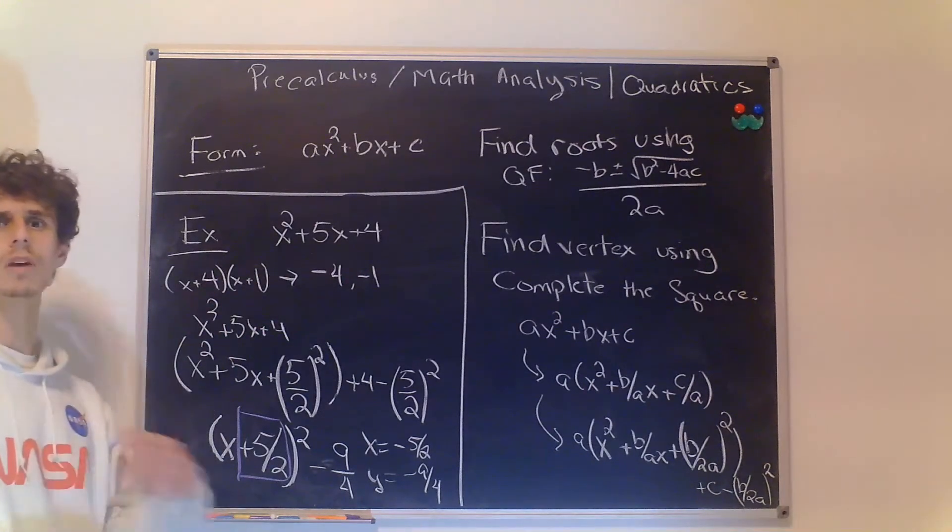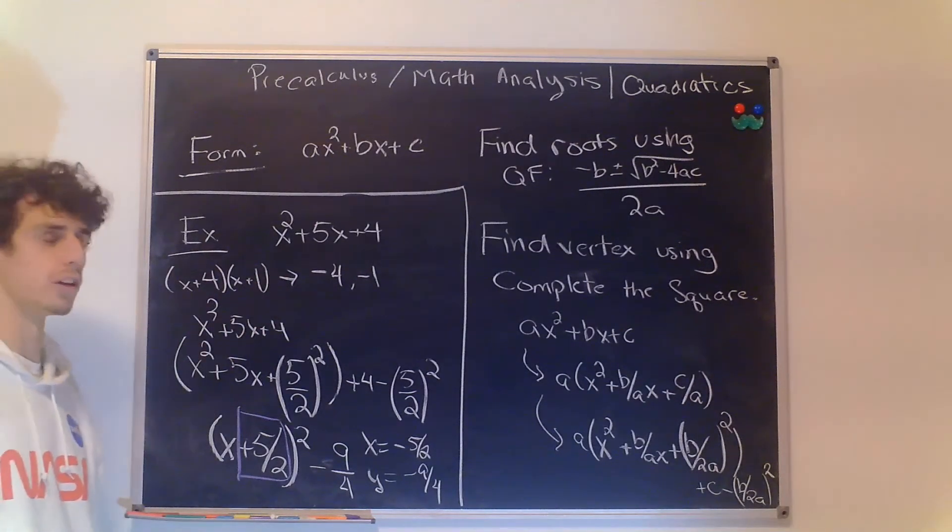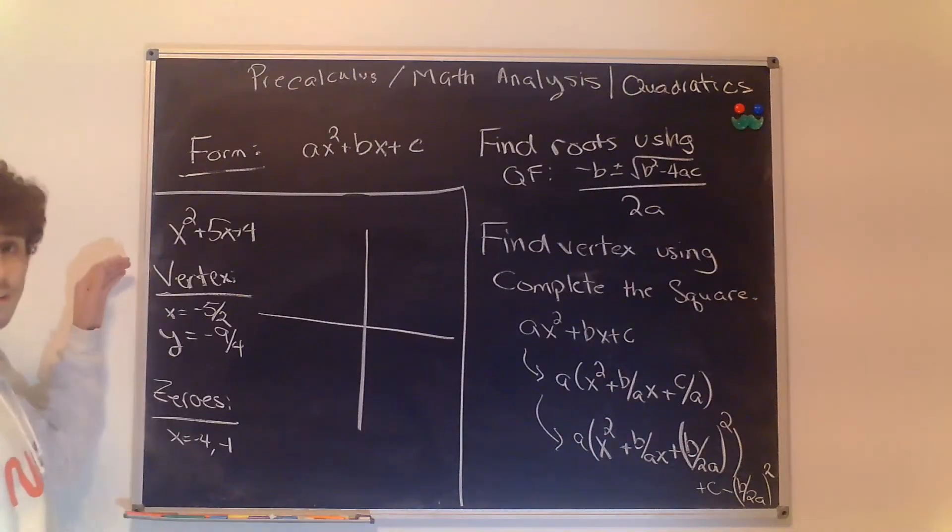Let's take a look at this graphically and then I think we'll finish this video off. Okay, so we just finished finding the vertex of this polynomial x² + 5x + 4 and we already found the zeros as well being x = -4 and x = -1.